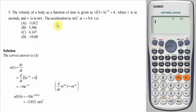First of all let me read the question. The question is the velocity of a body as a function of time is given as v of t equals to 5e to the power minus 2t plus 4.